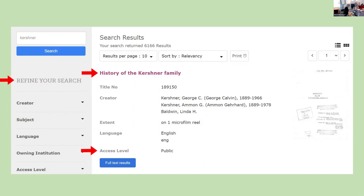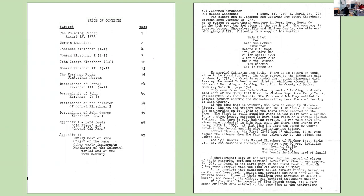If the access level says 'public access,' you can read it from home immediately and download or print pages as you go. For example, this is a 94-page genealogy of the Kirchner family beginning with my seventh great-grandfather, Yolanus Kirchner. It was written in 1940 by one of his descendants who had visited all the family farms with his father as a child. It contains a wealth of information about the family, their land ownership, dwellings, church, military service, and family lore.